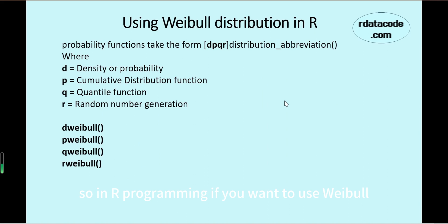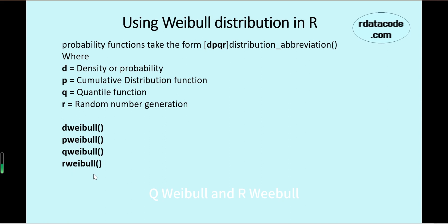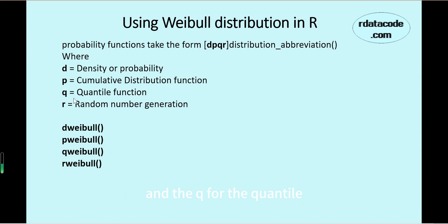In R programming, if you want to use Weibull distribution functions, there are four functions: dweibull, pweibull, qweibull, and rweibull. The prefix d represents the density, p for the cumulative probability, q for the quantile value, and r for random number generation.